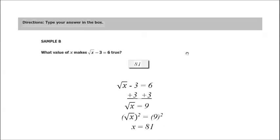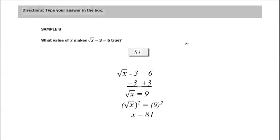Sample B: what value of x makes the square root of x minus 3 equals 6 true? We start with the square root of x minus 3 equals 6. Add 3 to each side — you get the square root of x equals 9. To get rid of the radical, we raise both sides to the power of 2, squaring the square root of x and squaring the 9, giving x equals 81. That makes sense because the square root of 81 is 9 and 9 minus 3 is 6. So 81 is our answer.